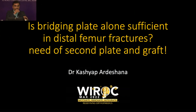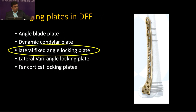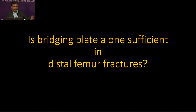Thank you Chairman. Good afternoon. The title is a little different due to print issues. The question is: is bridge plating alone sufficient in distal femoral fractures, or is there a need for a second plate or graft? It is a relatively common fracture with lots of complications — malunion, nonunion, implant failures — and many different implants available. The bridging plate: it's not always a locking plate. Angle blade plate, DCS, and different types of locking plates are there. Bridging is a concept rather than a plate.